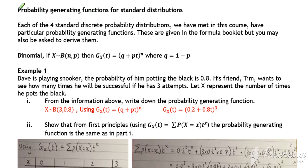In lesson two, we consider the probability generating functions for our standard distributions. So our standard discrete distributions: binomial, geometric, Poisson, and negative binomial.